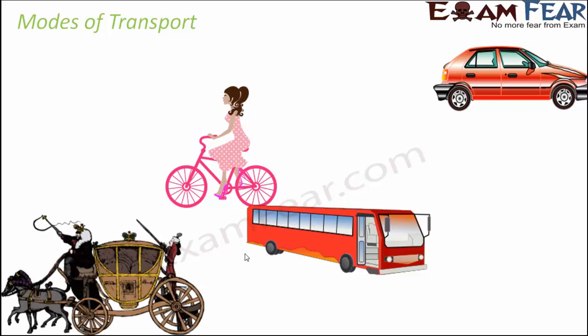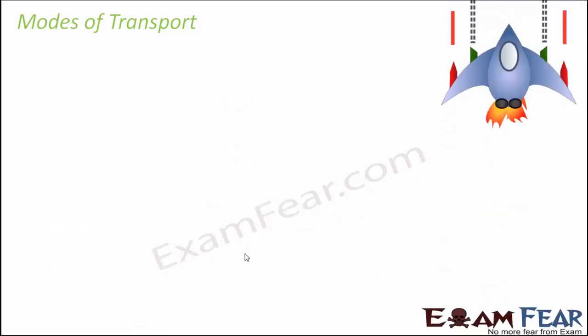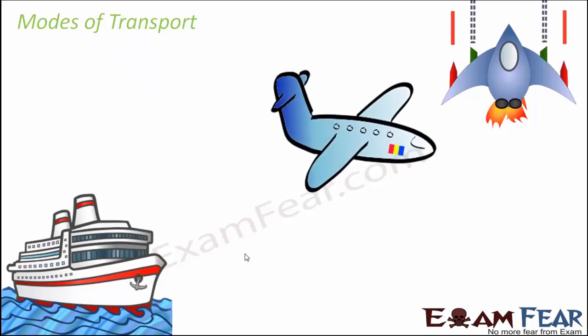In traditional times, bullock carts and horse-driven carts pulled by animals were also means of transport. In air and water, spaceships cover huge distances in space, ships help cover distances across oceans, and aeroplanes help cover distances through the air. These are all different means of transportation that help cover distances between places that are far apart.